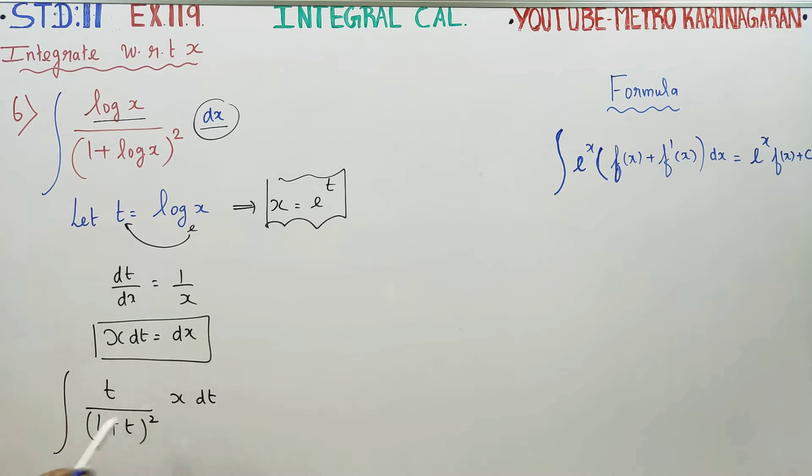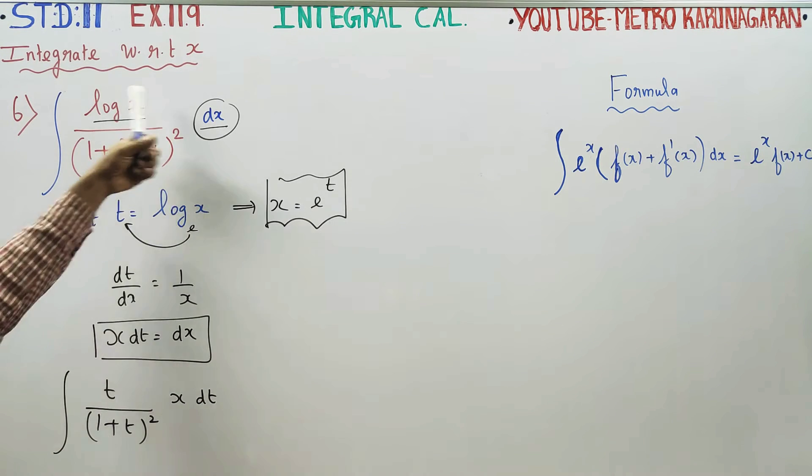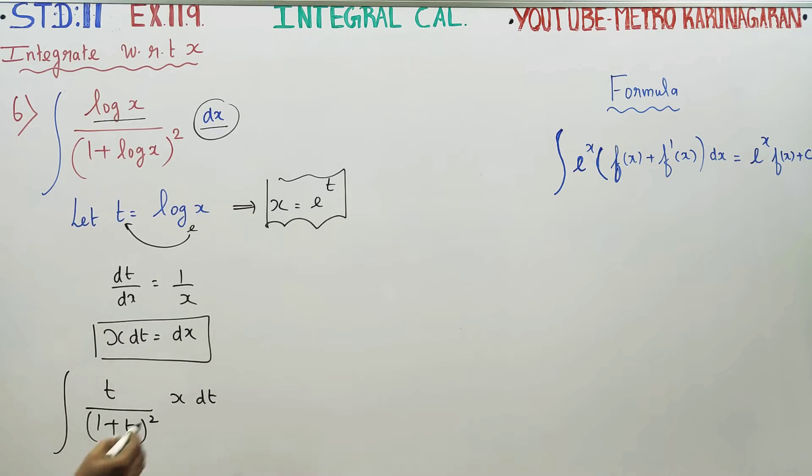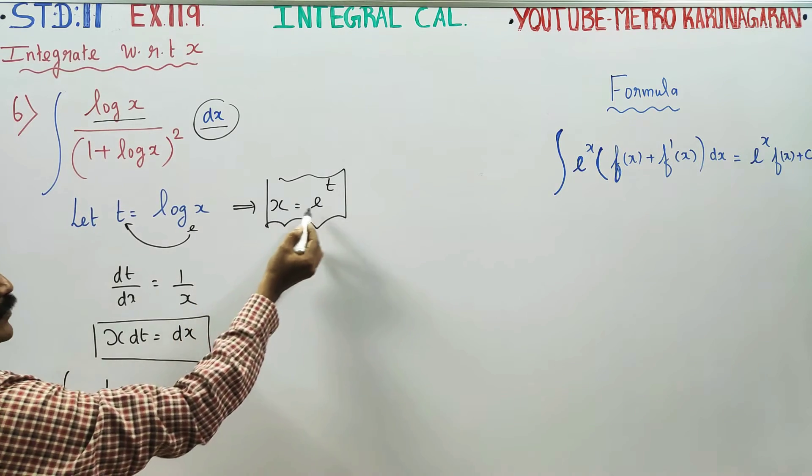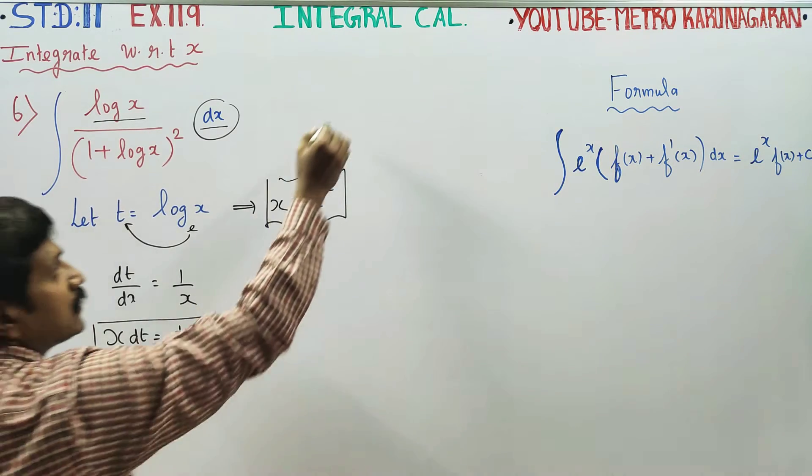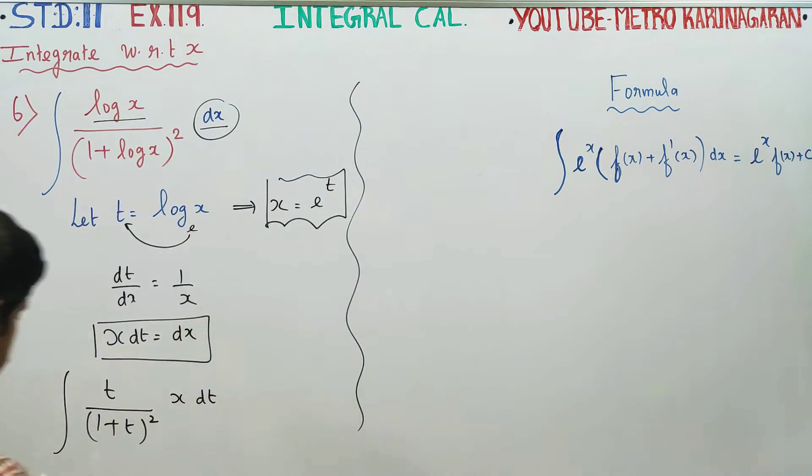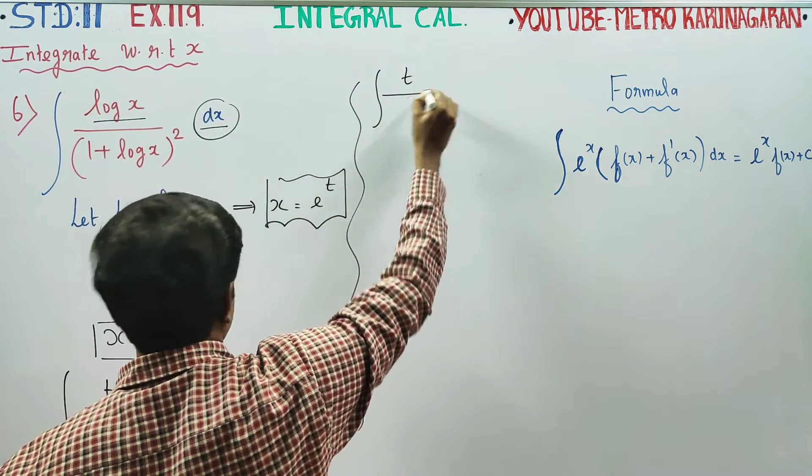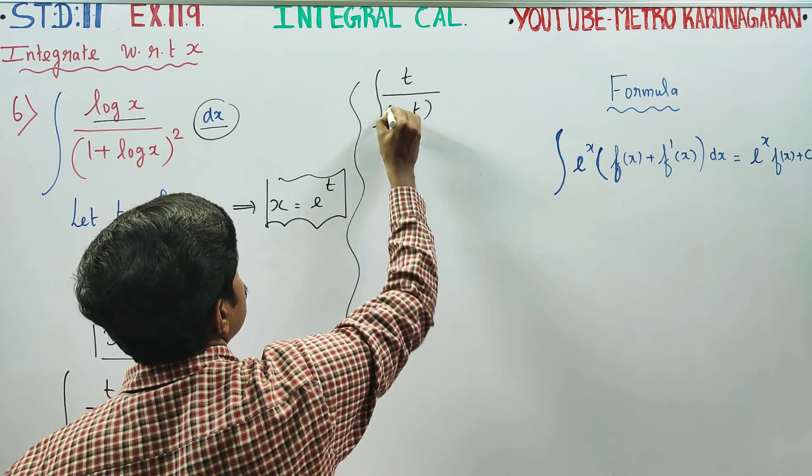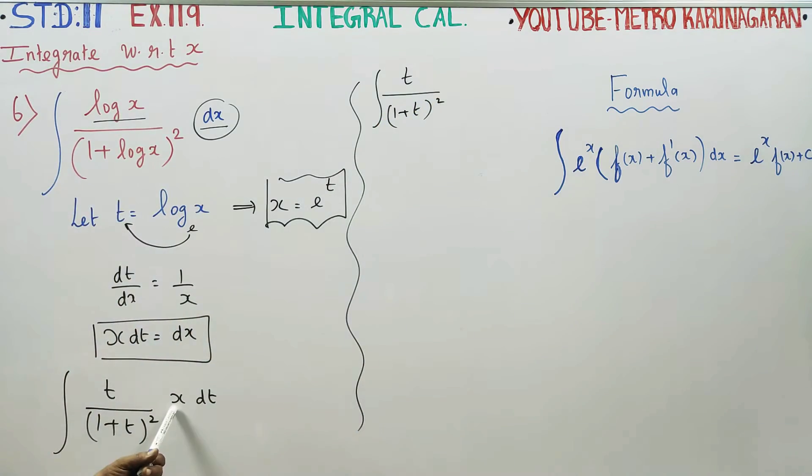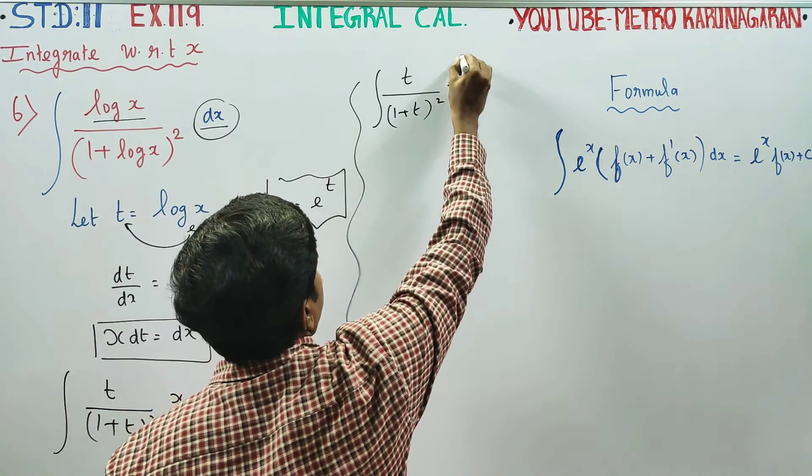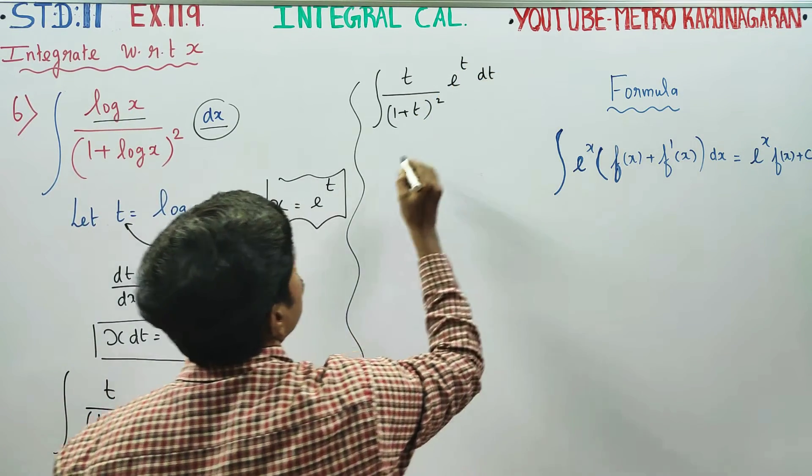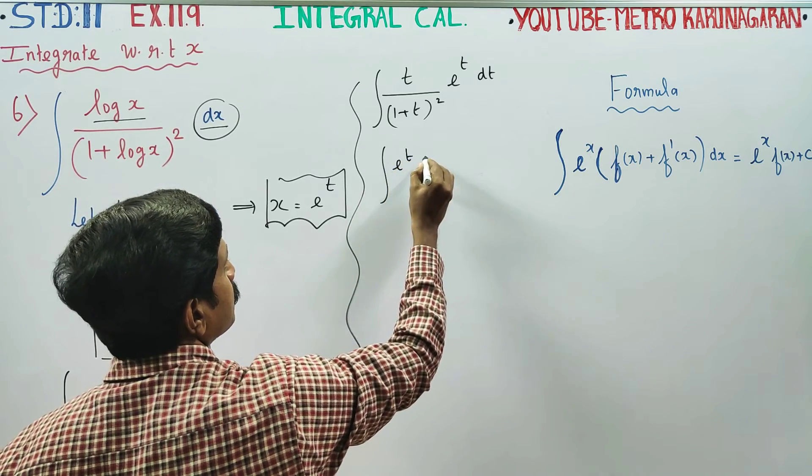X is not alone here. All of them need to be in terms of t. X is e power t, so your problem becomes integration t by 1 plus t whole square, e power t, e power t dt. Now my new problem is e power t by 1 plus t whole square dt.